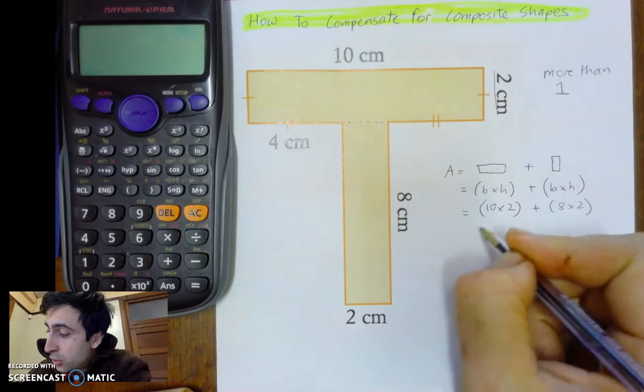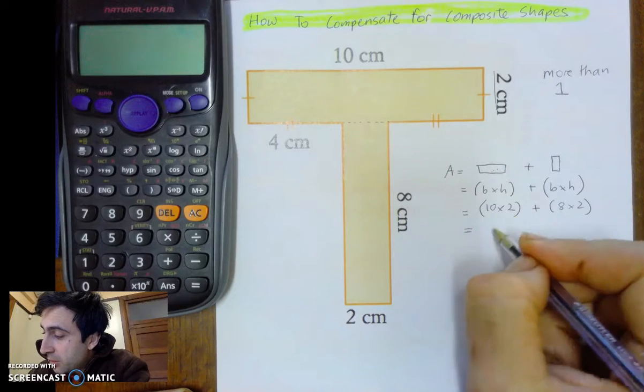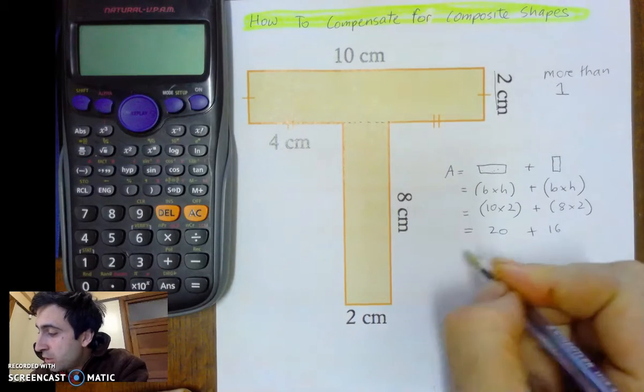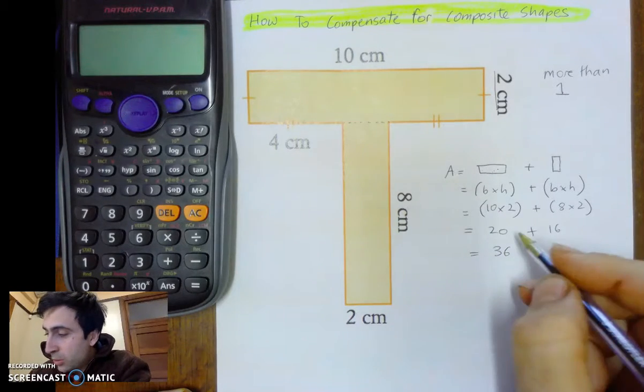So, 2 times 10 is 20, plus 8 times 2, which is 16. Therefore, this is going to be 36 centimetres squared.